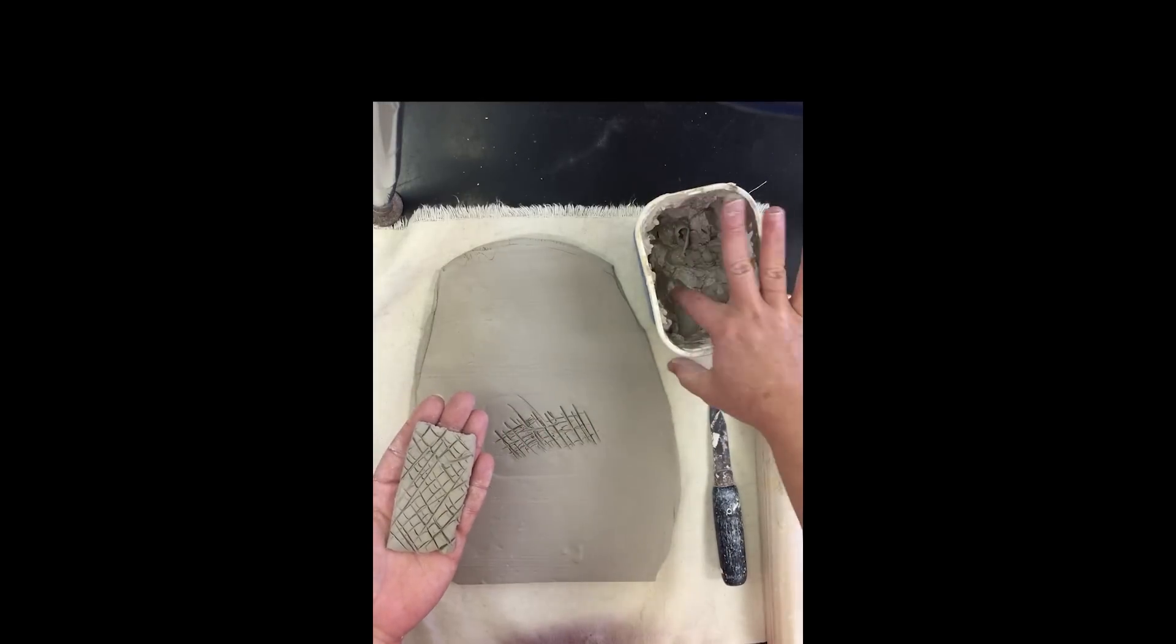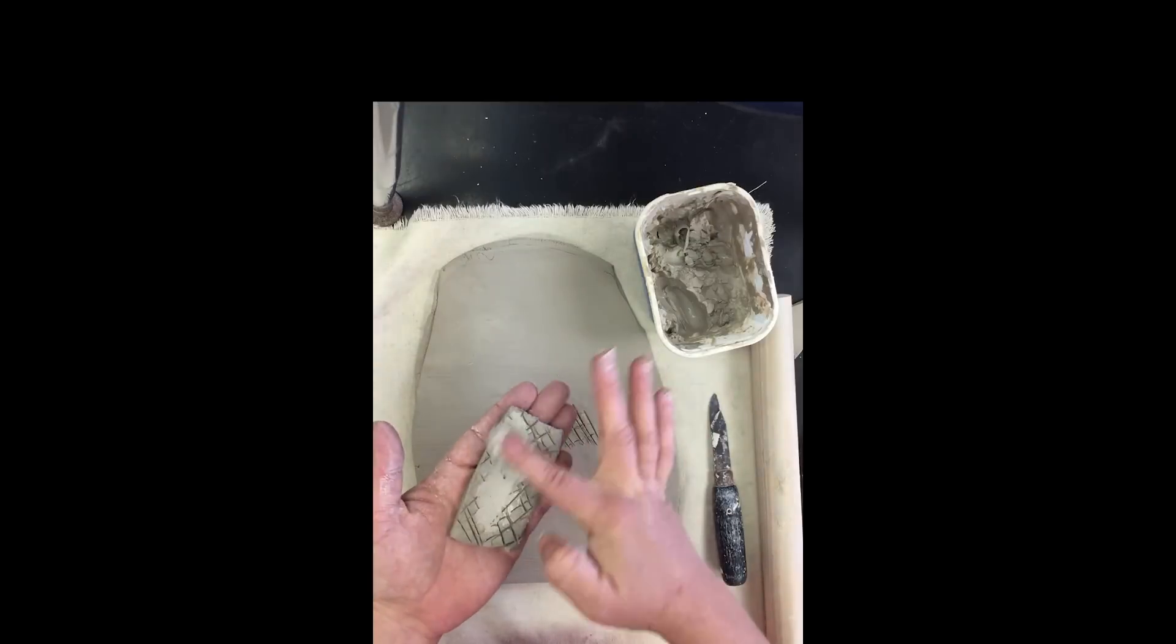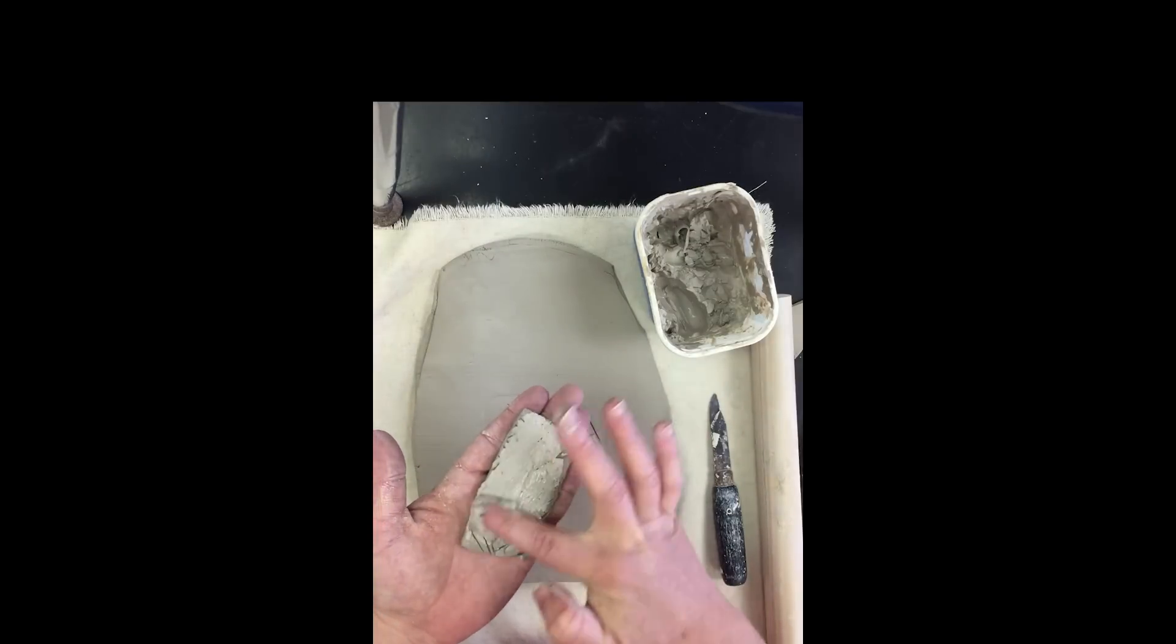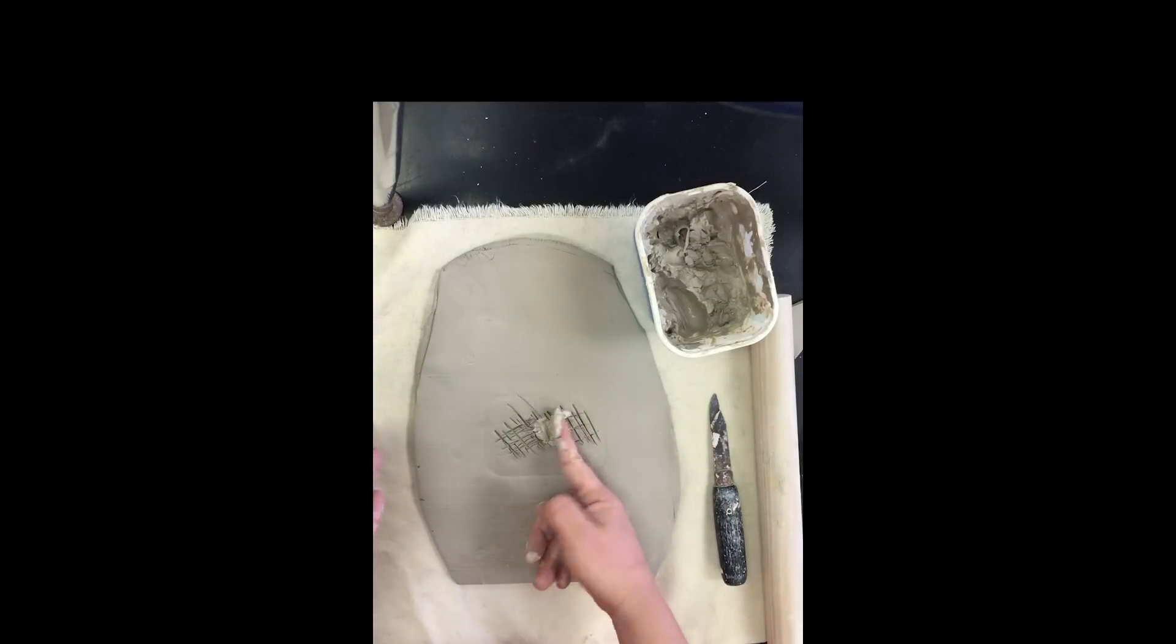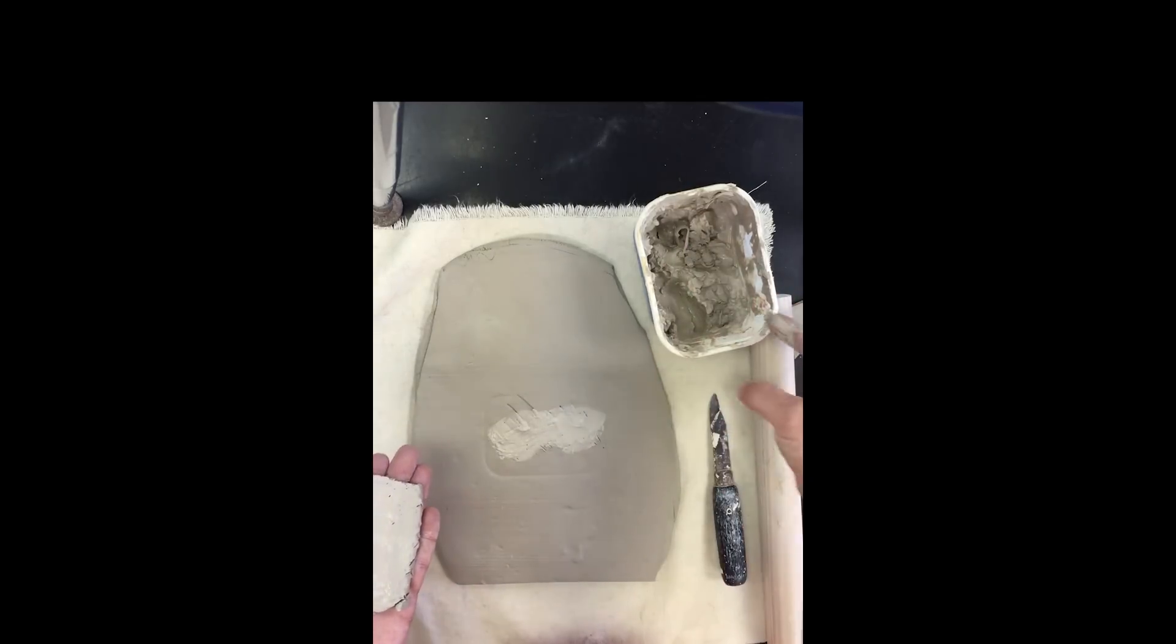So I got a good amount on both of these. I'm then going to take my slip here and I'm going to put it on here. You want to put it on like you're icing a cupcake or cake or whatever, but you don't want to see a lot of those marks. What the scoring does is it creates a suction cup. So if you don't have that suction cup, your clay piece that you're adding on may not stick on there.